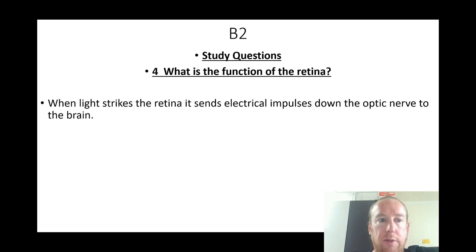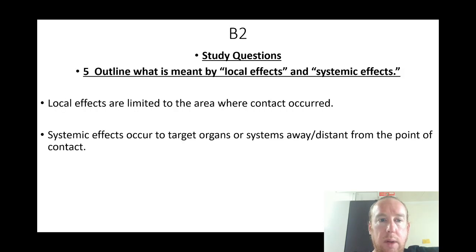What is the function of the retina? When light strikes the retina, it sends electrical impulses down the optic nerve to the brain. Outline what is meant by local effects and systemic effects: local effects are limited to the area where contact occurred; systemic effects occur to target organs or systems away or distant from the point of contact.